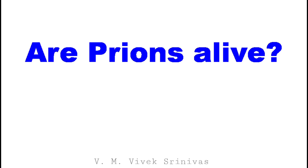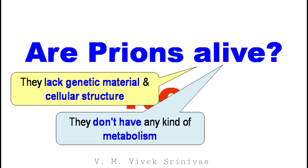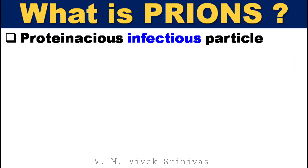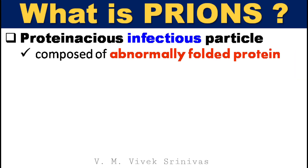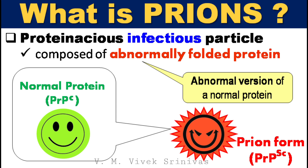Are these prions alive? No, they are not. They lack genetic material and cellular structure, so they don't have any kind of metabolism. Prions are proteinaceous infectious particles, which are composed of abnormally folded protein — that is, an abnormal version of a normal protein.